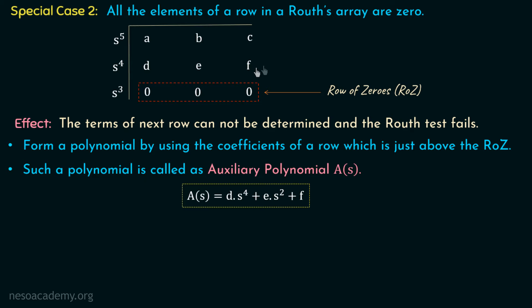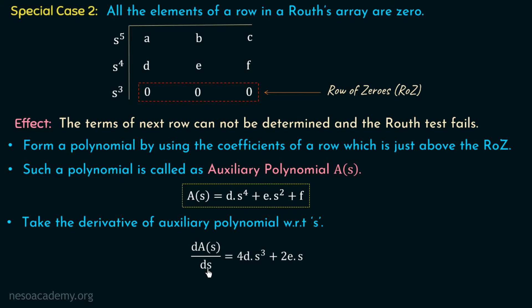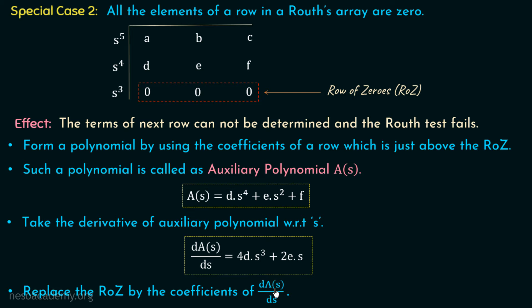In step 2, we need to take the derivative of the auxiliary polynomial with respect to s. So dA/ds = 4d·s^3 + 2e·s. Here d is a constant, and the derivative of s^4 is 4s^3, giving 4d·s^3. Similarly, the derivative of s^2 is 2s, giving 2e·s. The derivative of the constant f is 0. The coefficients of dA/ds are 4d and 2e.